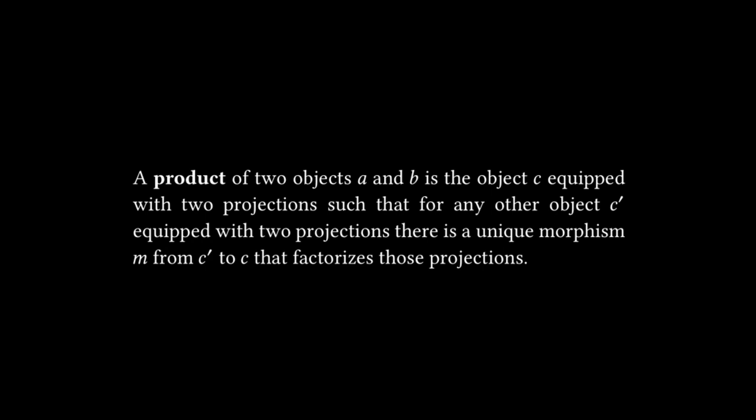The concrete example that Bartosz mentions both in the lectures and in the book is a pair. So in Haskell, you can think of this as a two tuple. In a language like C++, you can think of this as a std pair of two elements. And we have morphisms, aka functions, for getting the two elements of the pair out. In C++, that's your dot first and dot second. In Haskell, that's your fst and snd functions.